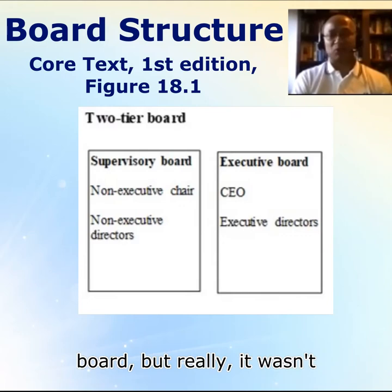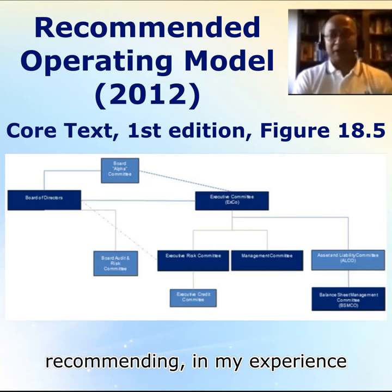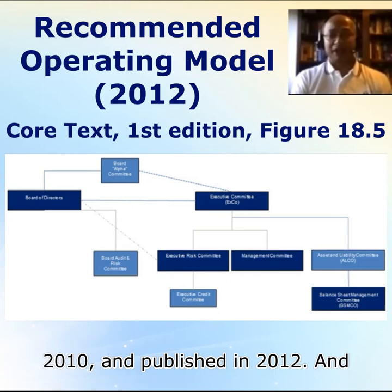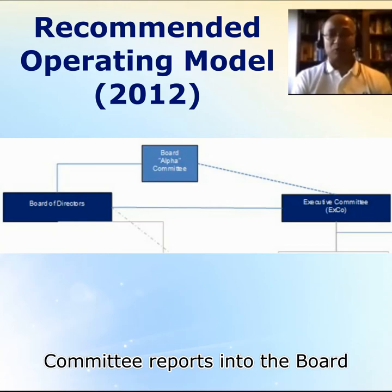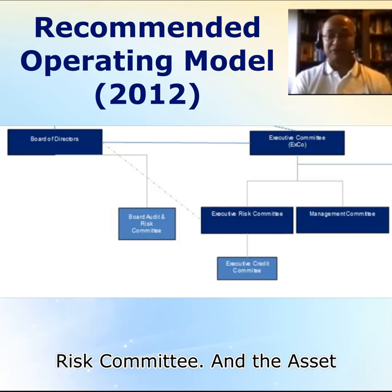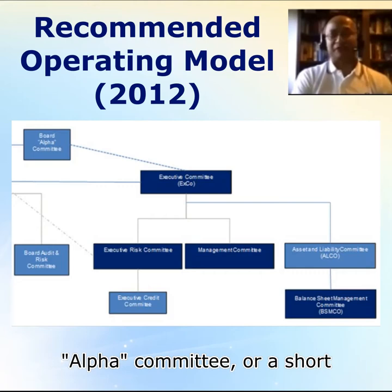I wanted to dwell on my original suggested governance framework. Looking at the core text, originally written in 2010 and published in 2012, it shows an orthodox arrangement where the executive committee reports into the board of directors, the executive credit committee reports into the executive risk committee, and the ALCO reports into the EXCO. I had added an esoteric touch — something I called an alpha committee, or a short form of the board.